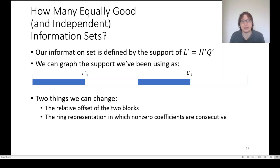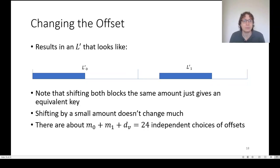One way we can do this is by looking at the pattern of the information set, which is the blank bits on this diagram. Half of L is outside the information set, half of each block. We can change which half of one of the blocks. We can shift one of the blocks around. There's also another way we can generate new information sets, which we'll talk about later, which is changing how the ring is represented.